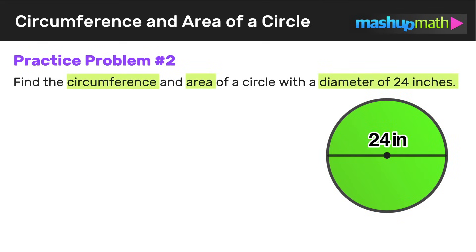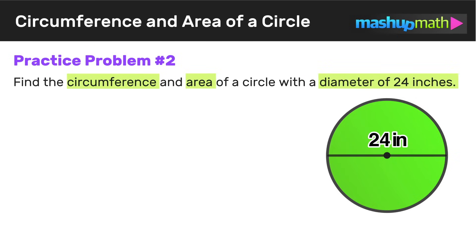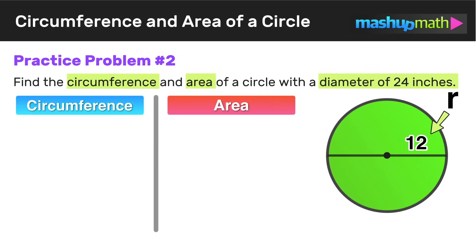Here's practice problem number two. We have to find the circumference and area of a circle with a diameter of 24 inches. This example is a little different because we aren't given the radius — we're given the diameter. We should know that a radius is equal to half of the diameter. So if the diameter is 24, half of 24 is 12. Therefore the radius r equals 12, and we're ready to use our formulas.